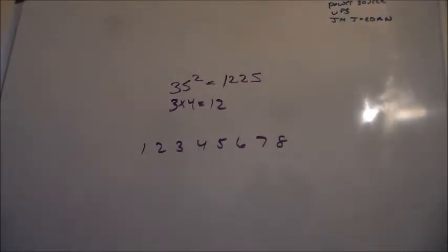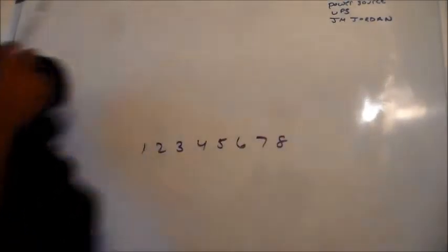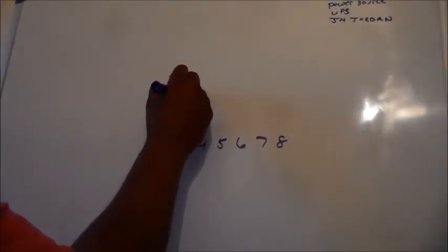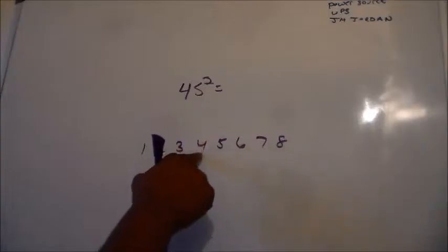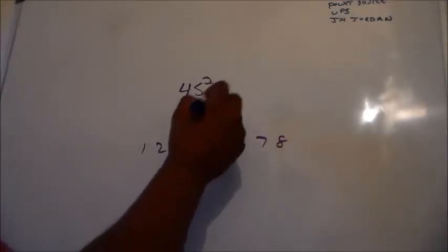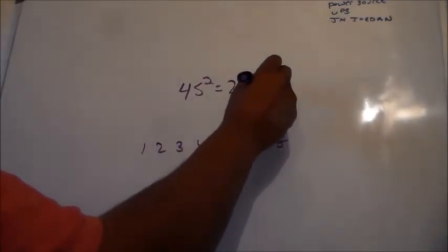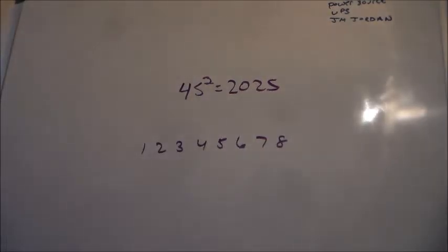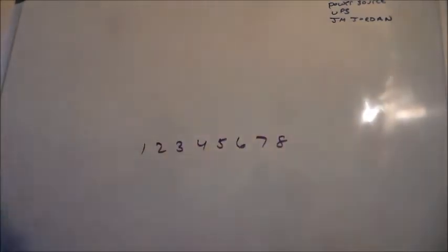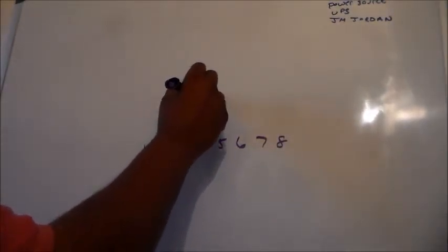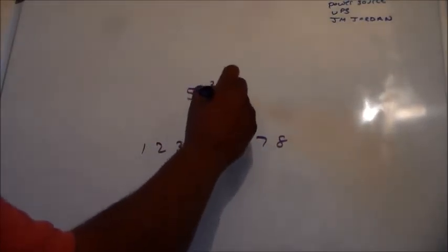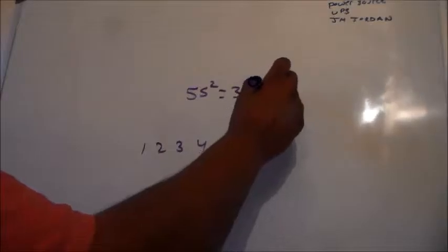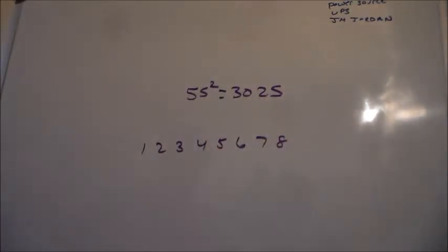We'll erase that. We're going to square 45, right? It would be 4 times 5, which is 20, 2,025. I can kind of do them in my head at this point. 55 squared, 5 times 6 is 30, 3,025 is the answer.